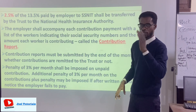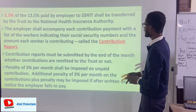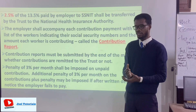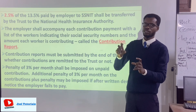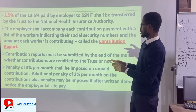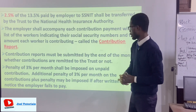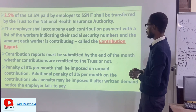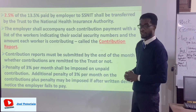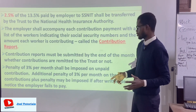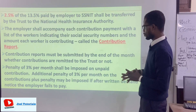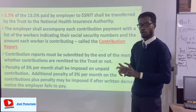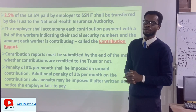The employer shall accompany each contribution payment with a list of workers — a contribution report. There must be a list to support whatever payment has been made, proving that payment was made for the workers. Employees have their social security numbers, and the employer must attach the contribution report to those numbers for submission to SSNIT. The employer must also ensure that contribution reports are submitted by the end of the month, whether or not contributions have been remitted.